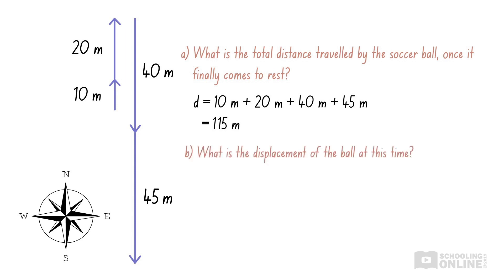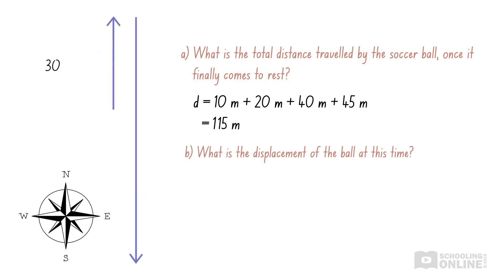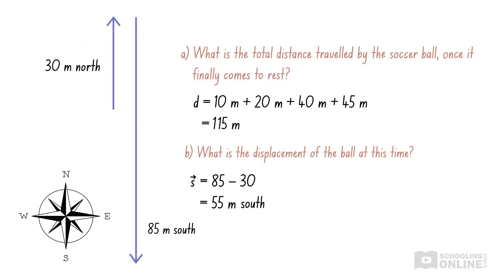The second part of this question is about displacement. Since displacement is a vector, we will need to carefully consider the direction that the ball moves. As we can see on the diagram, the ball moved 30 metres north and then 85 metres south. Since they are in opposite directions, the magnitudes will subtract, giving us a total magnitude of 55 metres. Since the ball moved further south than it did north, the ball must have ended south of the centre line. Thus, the ball's displacement is 55 metres south.